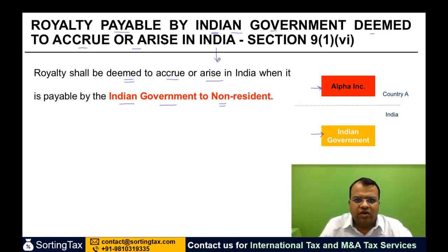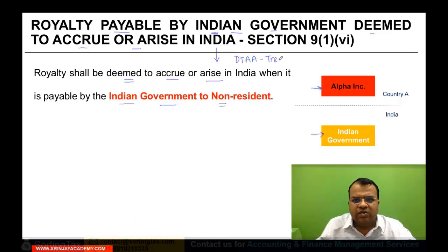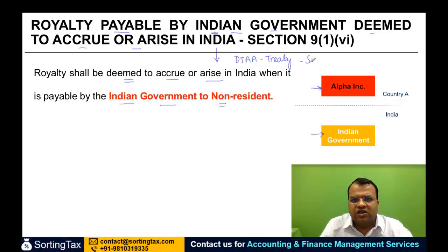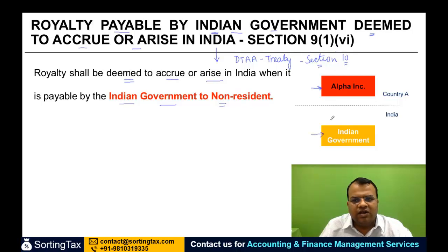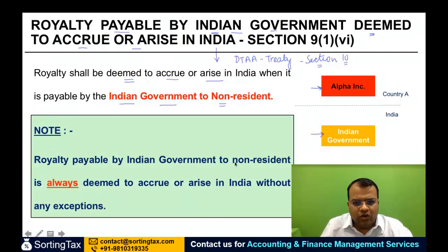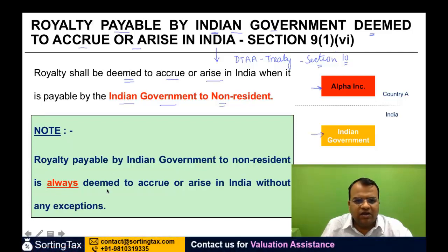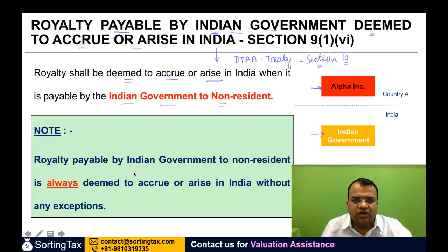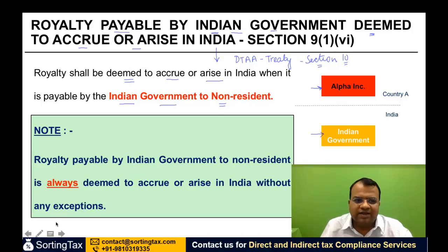Once it is deemed to accrue or arise, there may be exemptions available under a double taxation avoidance agreement — which we also call a treaty — or under section 10, depending on who the recipient is. But as far as the question of whether it will be deemed to accrue or arise in India: if royalty is paid by the Indian government to a non-resident, it shall always be deemed to accrue or arise in India without any exceptions. In cases where a resident or non-resident pays, there are some exceptions — but in the Indian government's case, there are no exceptions.